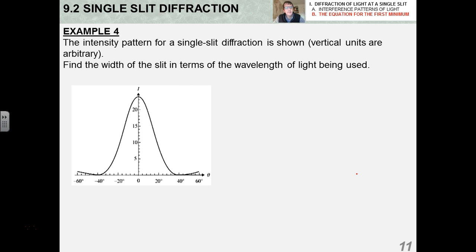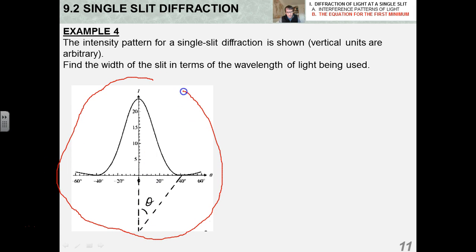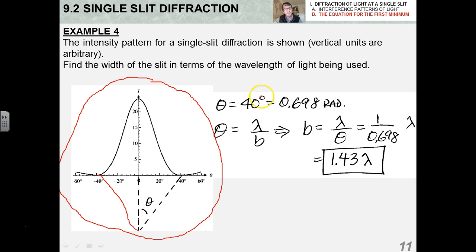And I think this is the last example I'm going to do for you, example four. The intensity pattern for a single slit diffraction is shown. The vertical units are arbitrary. This is the kind of graph you're going to see a lot more of in the next section. Find the width of the slit in terms of the wavelength of the light being used. So if you imagine that you're standing back behind the light source and you're looking towards a screen, this is what you would see. This is kind of a three-dimensional rendering of how theta fans out to the right. You can see that the angle between the central maximum and the first minimum is 40 degrees, as given in this diagram. Well, I have to convert 40 degrees to radians in order to use this equation, as usual. And then I just solve for B, and I get that B is actually almost one and a half times the wavelength. So obviously, if I'm given the wavelength, I can come up with the numerical answer for B, but that's not required for this particular example.